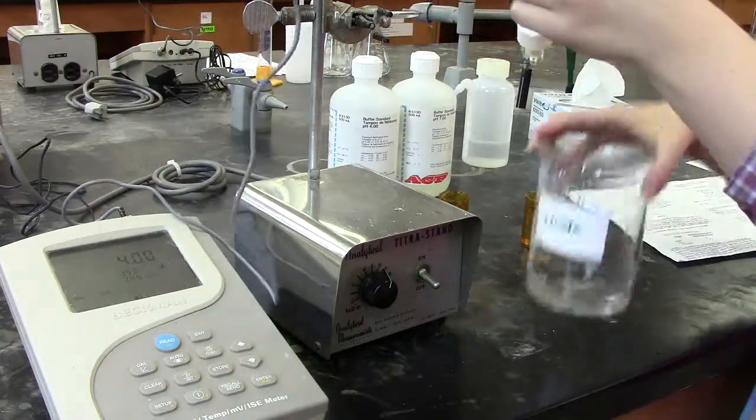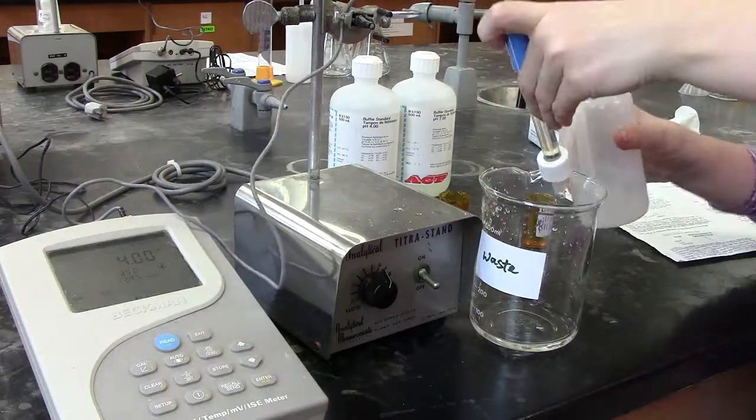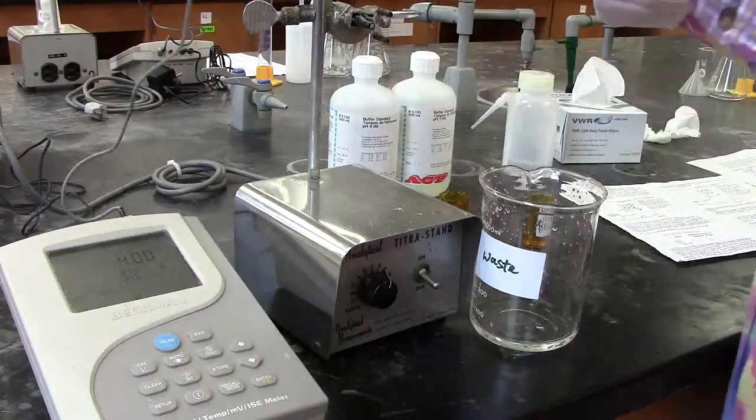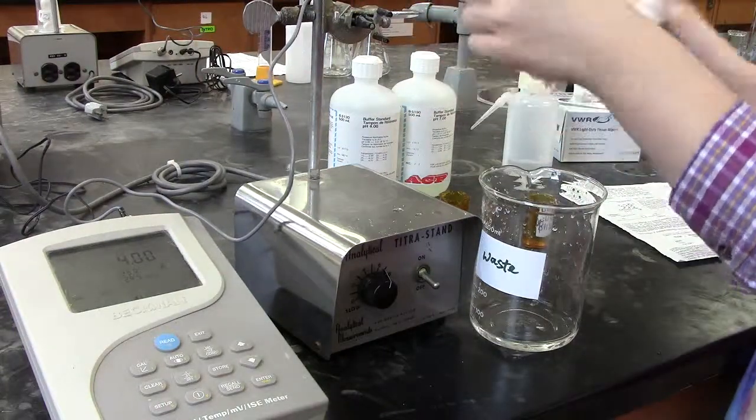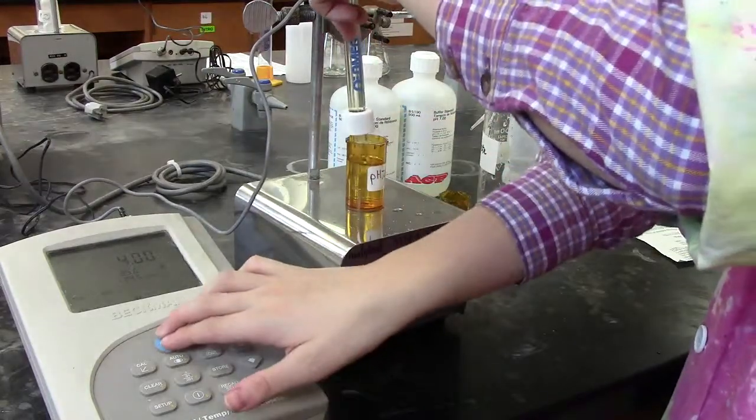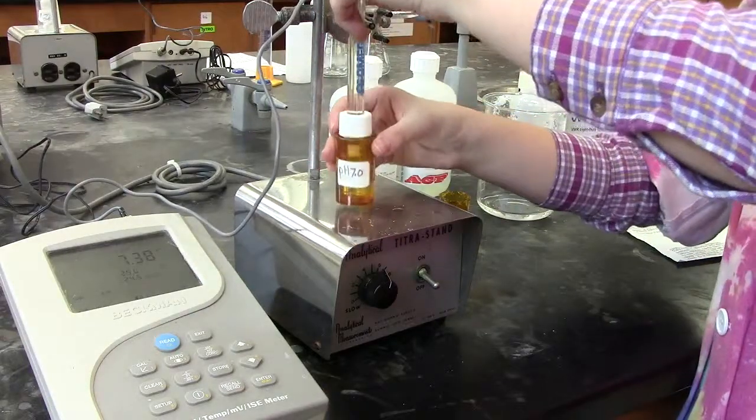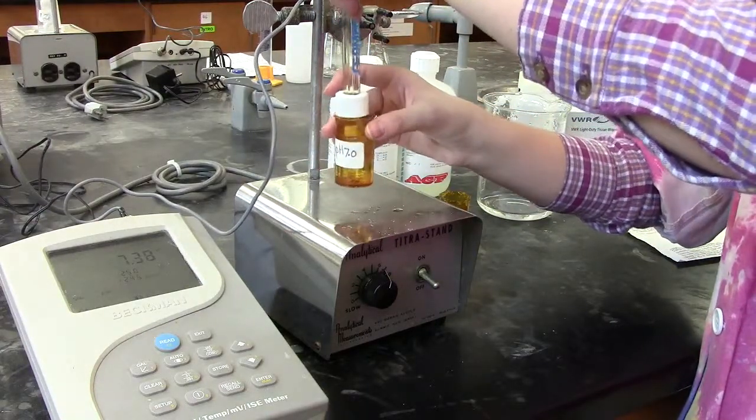First however, we need to rinse our electrode once more. We now need to press read and the second measurement will be taken. The second measurement is going to be taken at a known pH of seven.